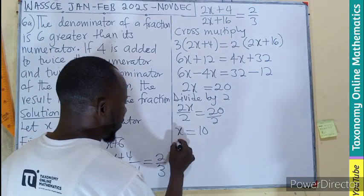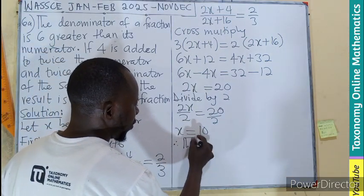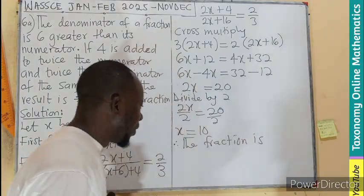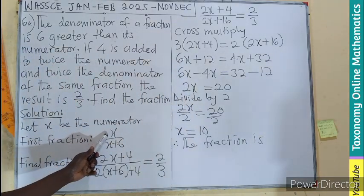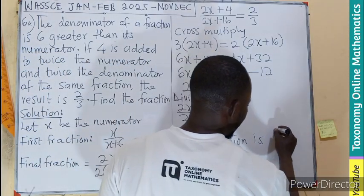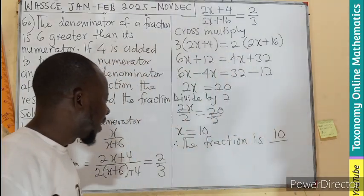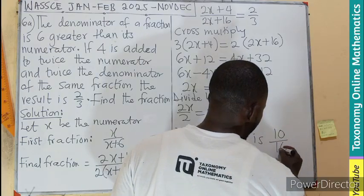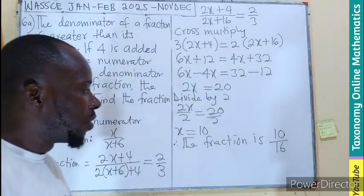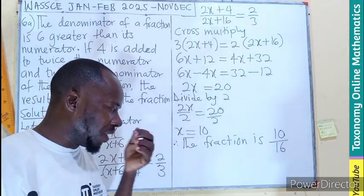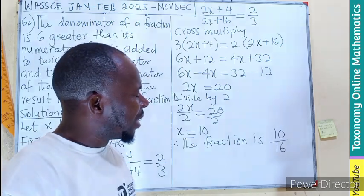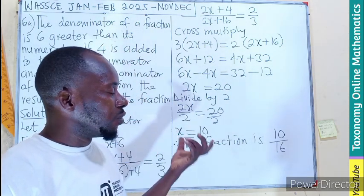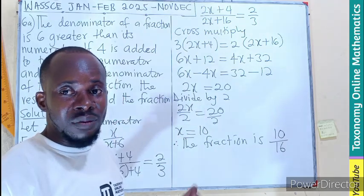So therefore, the fraction is going to be the x part, which is 10. The second part, which will be 10 plus 6, that will be 16. So the fraction we're looking for is 10 on 16. If we divide further, I believe 2 can go there to give us 5, 2 can go here, 8. So 5 on 8.